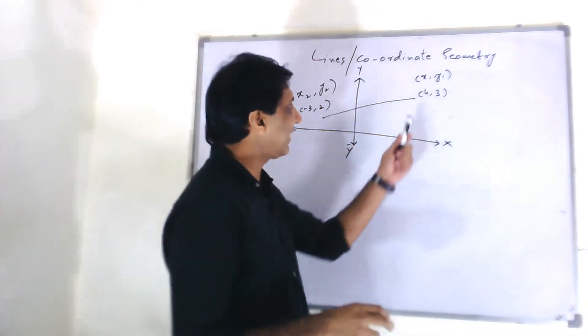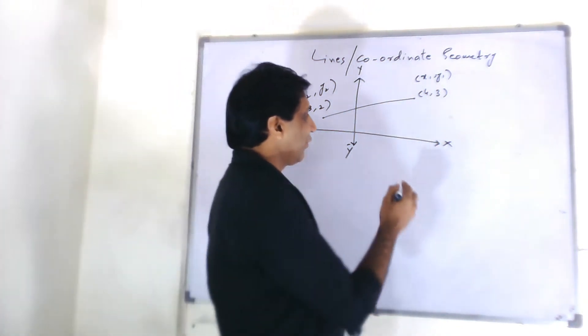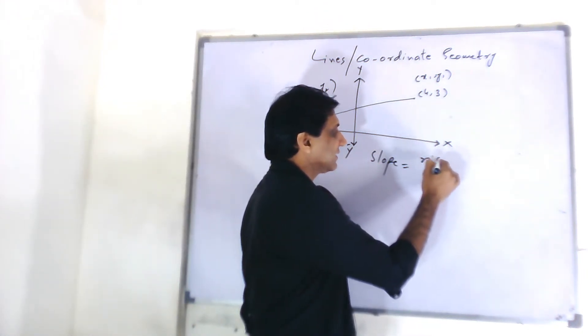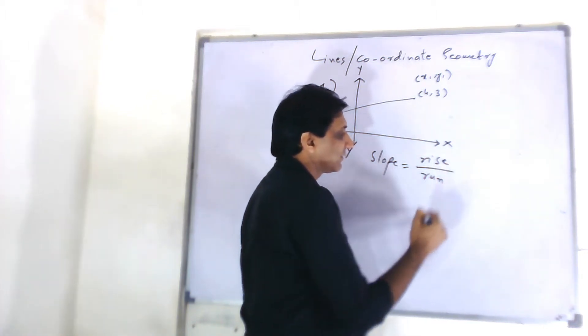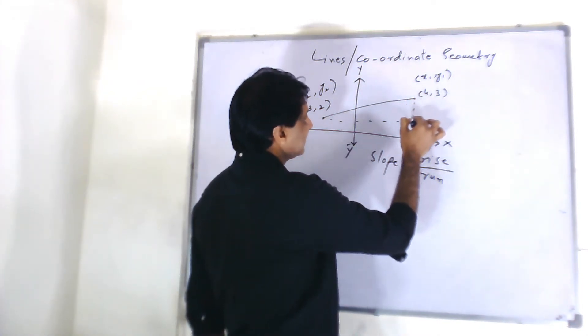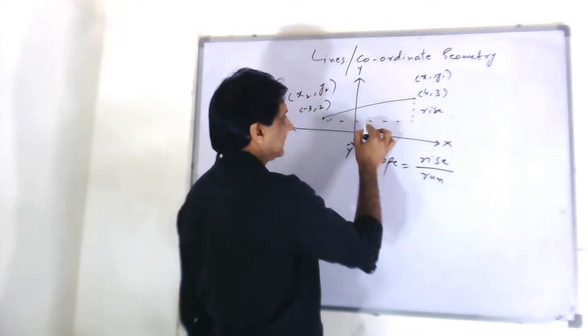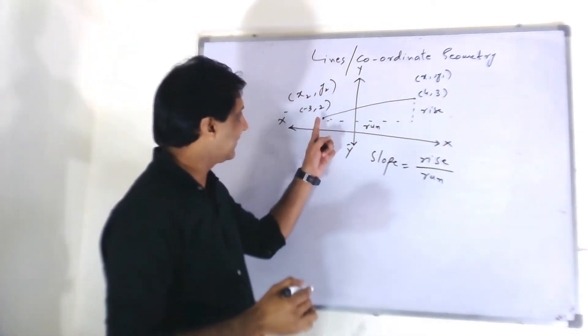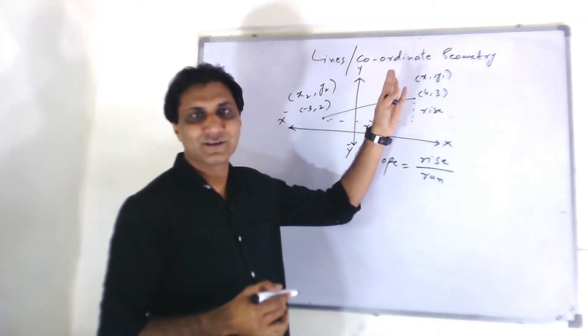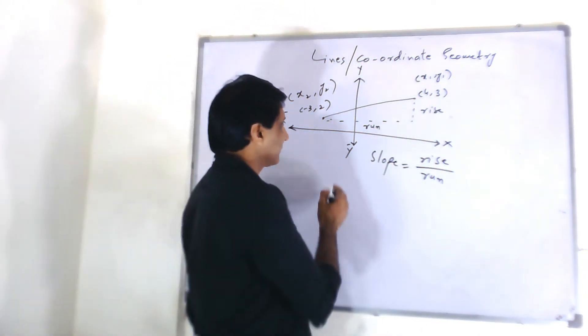Sometimes, you need to find out the gradient or slope of this line. Slope or gradient is rise upon run. This is rise, this is run. Like, starting from here. How far you have gone and how high you have gone. This ratio is called slope or gradient.